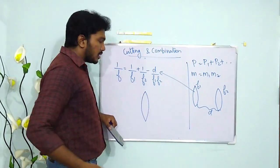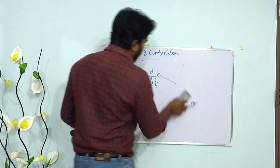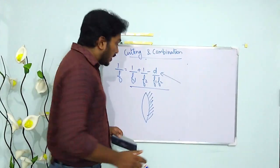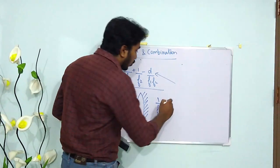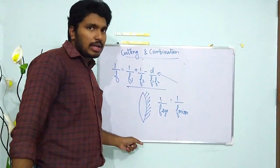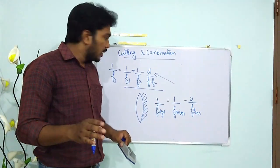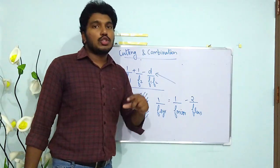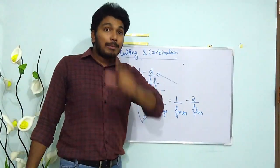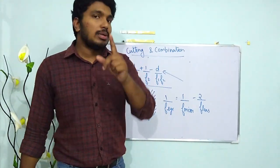If one side of a lens is silvered, it acts as a combination of a lens and a mirror. The equivalent focal length of the system is: 1/F_system = 1/F_mirror − 2/F_lens. Remember to apply sign convention: for a convex lens, focal length is positive; for a concave lens, focal length is negative.